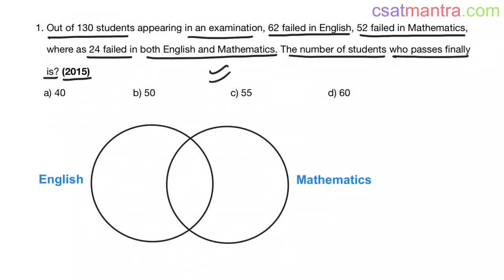Here, we have two sets: students who failed in English and students who failed in Mathematics. So I have drawn two circles.